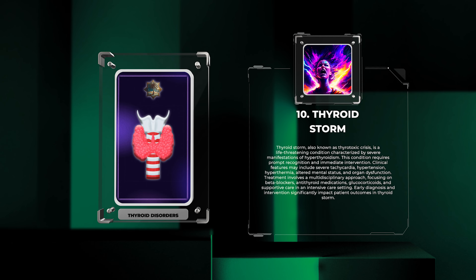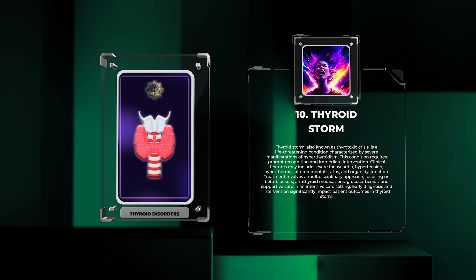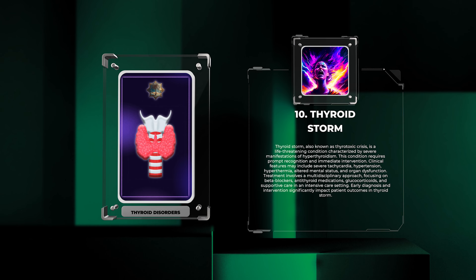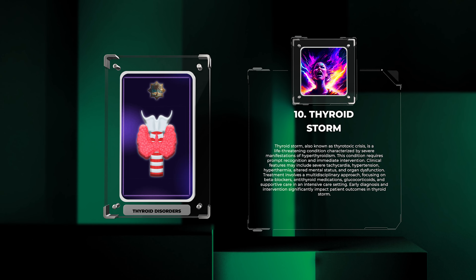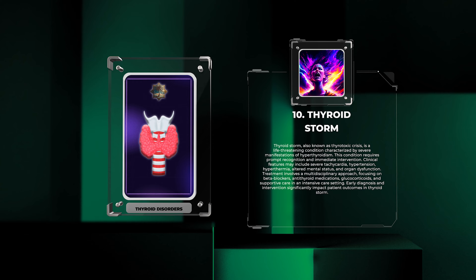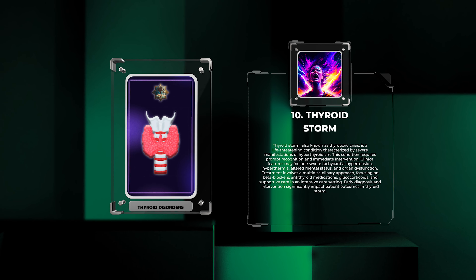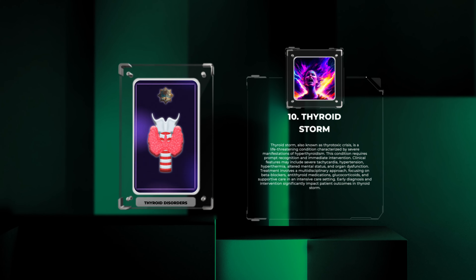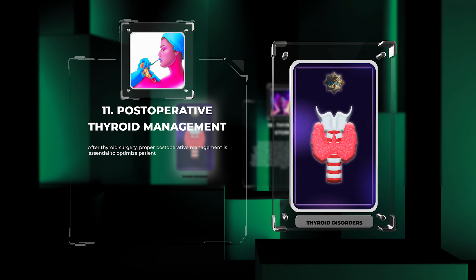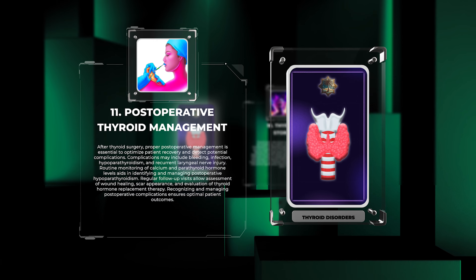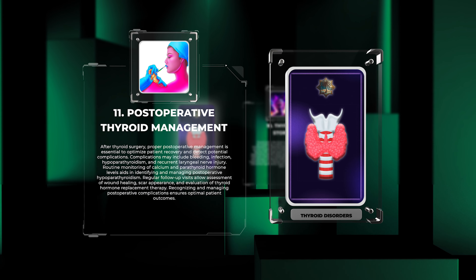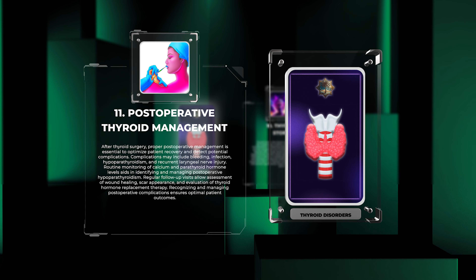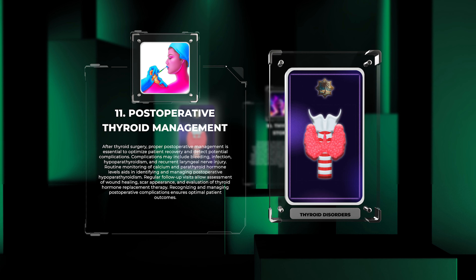Thyroid storm, also known as thyrotoxic crisis, is a life-threatening condition characterized by severe manifestations of hyperthyroidism requiring prompt recognition and immediate intervention. Clinical features may include severe tachycardia, hypertension, hyperthermia, altered mental status, and organ dysfunction. Treatment involves a multidisciplinary approach focusing on beta blockers, antithyroid medications, glucocorticoids, and supportive care in an intensive care setting. Early diagnosis and intervention significantly impact patient outcomes.